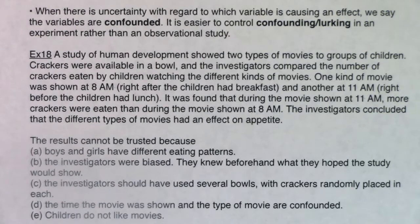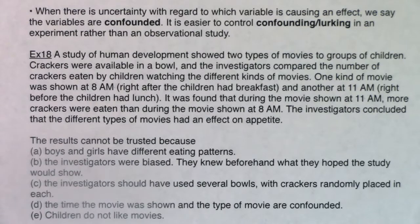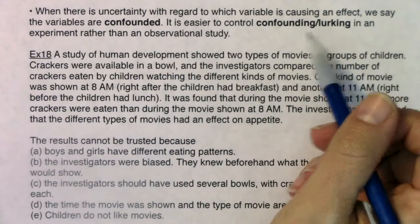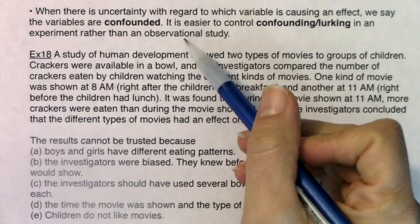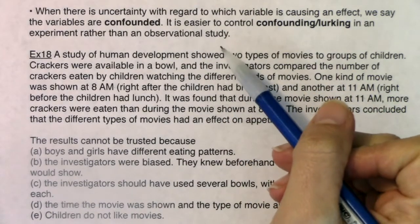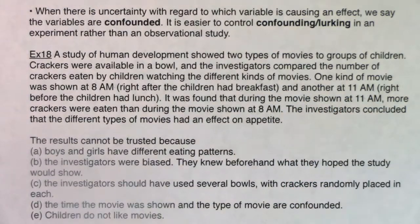When there is uncertainty with regard to which variable is causing the effect, we say the variables are confounded. It's easier to control a confounding or lurking variable in an experiment rather than an observational study.